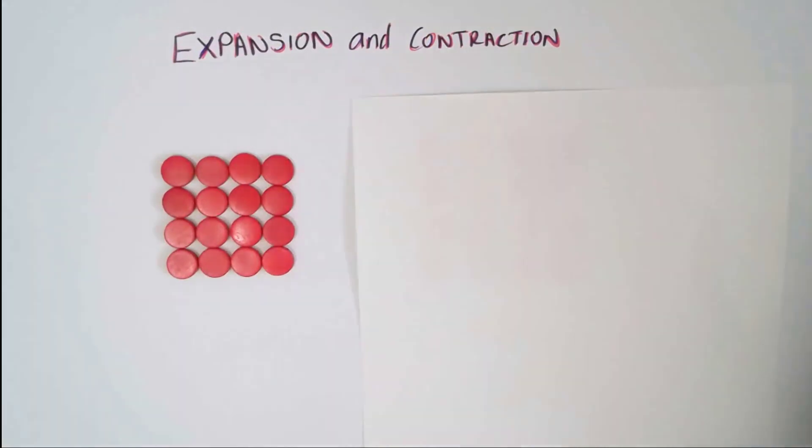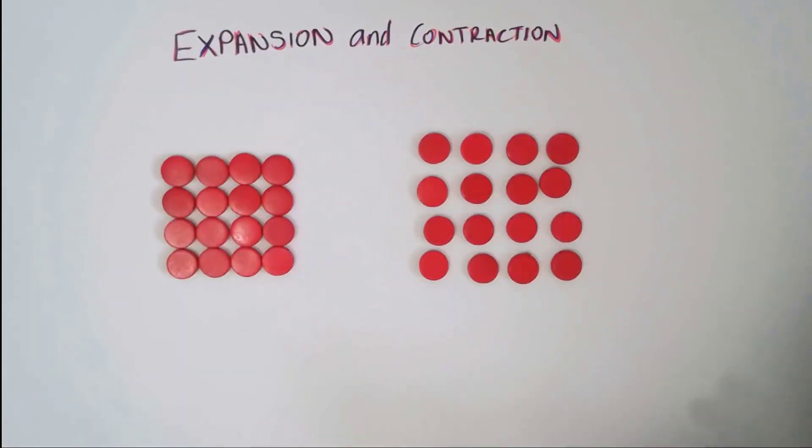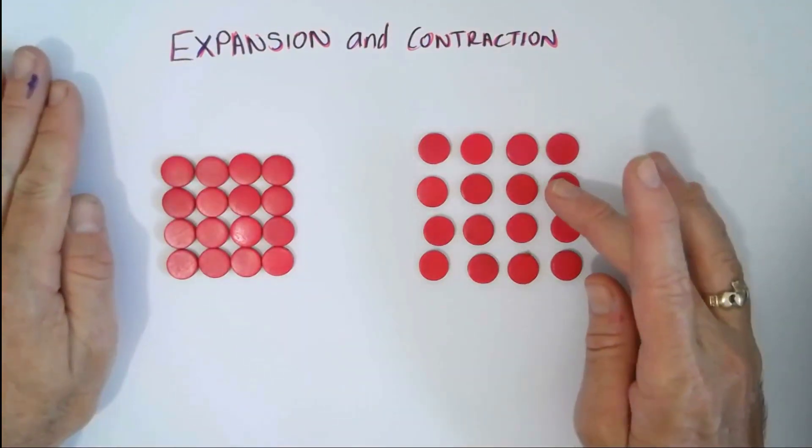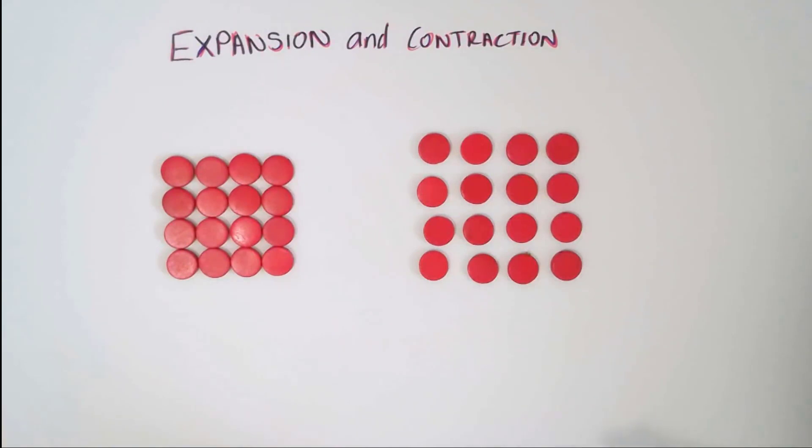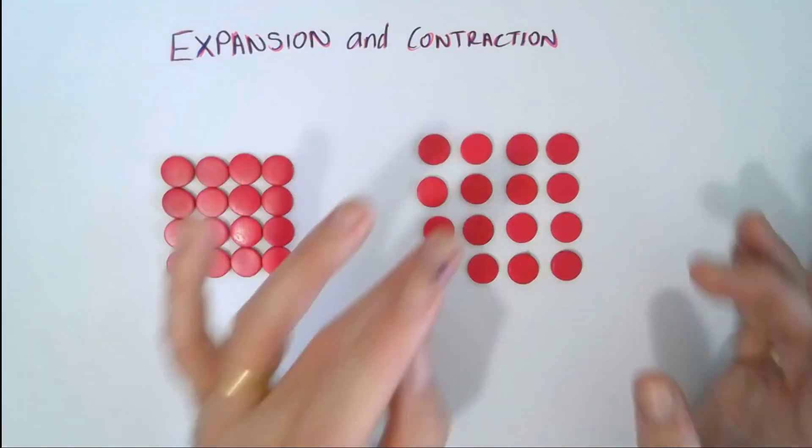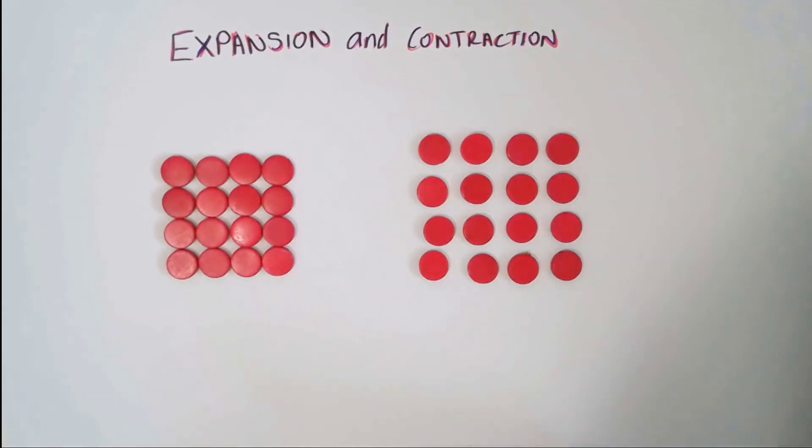When particles vibrate faster, they move apart a little bit because they need to take up more room, and so what happens is that the substance actually expands. It takes up more space, it takes up a larger volume.